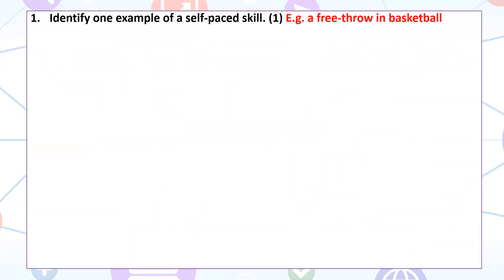So the first one: one example of a self-paced skill. A self-paced skill is one where you control the start and the speed of the movement — something like a free throw in basketball, where no one else is pressuring you and you can take your time, bounce the ball, look up at the basket, and in your own time you play the shot. Lots of other examples: a golf shot, a tennis serve — anything where you're in control of the start and the speed of the skill.